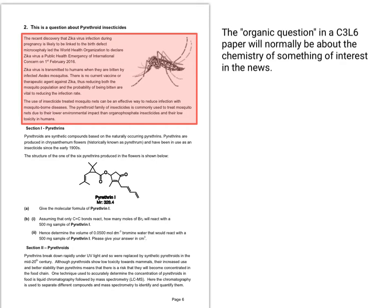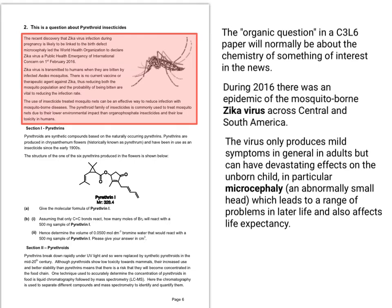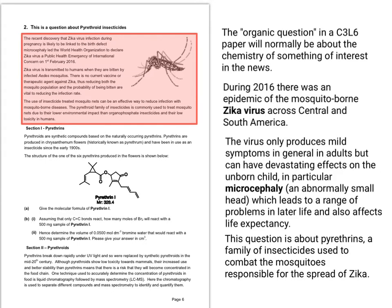To give it context, the organic question in the C3L6 paper will generally be about something that's been in the news that particular year. During this particular year, there was an epidemic of the mosquito-borne Zika virus across Central and South America. This virus generally only produces mild flu-like symptoms in adults, but if a mosquito bites a pregnant mother and the virus reaches her unborn child, you can get effects such as microcephaly — an abnormally small skull — which leads to problems for the child including affected life expectancy. This question is about a family of insecticides called pyrethrins, used to combat the spread of Zika by killing the responsible mosquitoes.